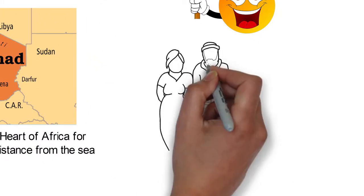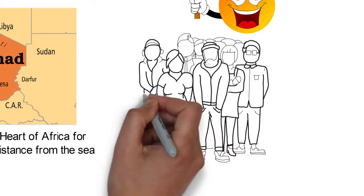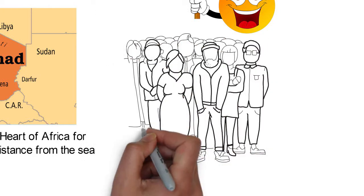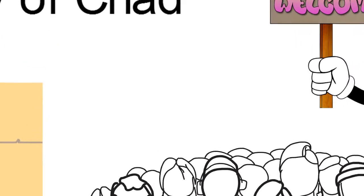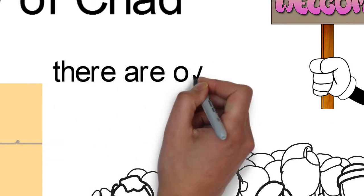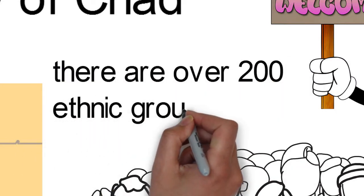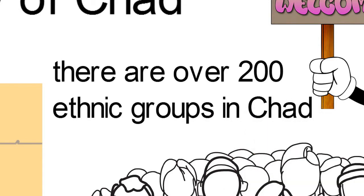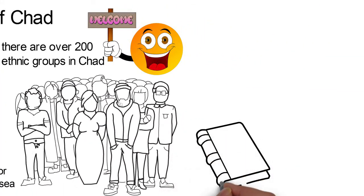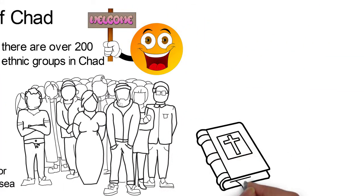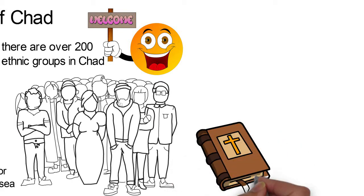The capital of Chad is N'Djamena. The population of Chad as of 2018 is over 15 million. The lingua franca of the Chadians are Arabic and French, and there are over 200 ethnic groups in Chad, with 51.8% being Muslims and 41.4% Christians.